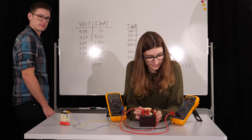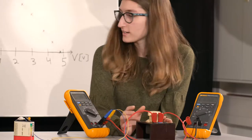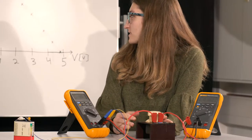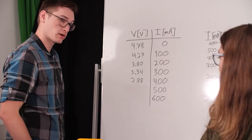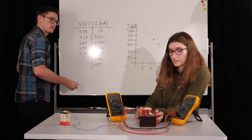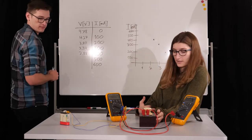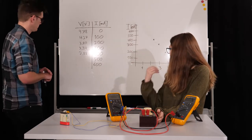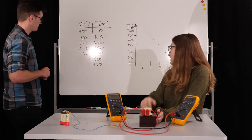Hey, how's your experiment going? It's going good, but I need a couple more data points. Could you help me out? Yeah, no problem. What are we reading? So I'm choosing a current and reading the voltage that goes with it in order to make an IV diagram.